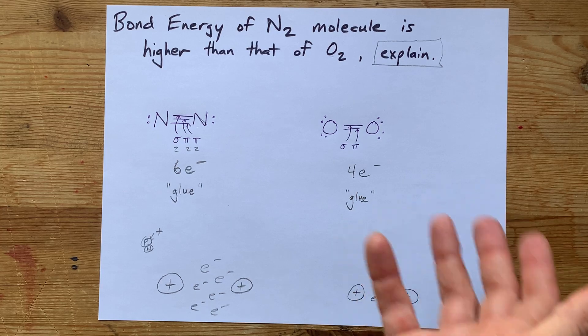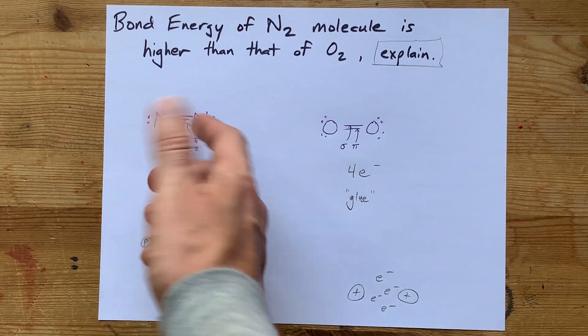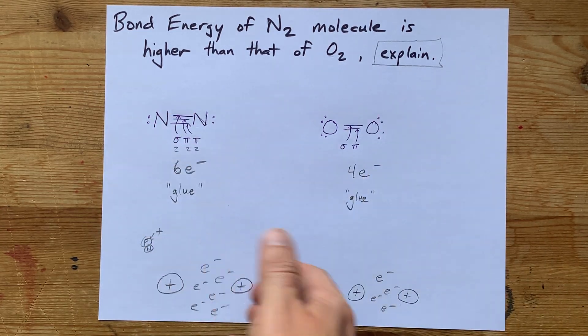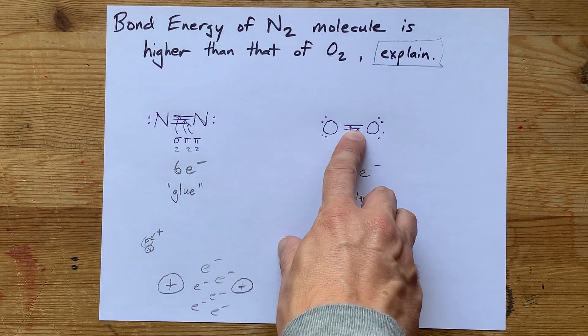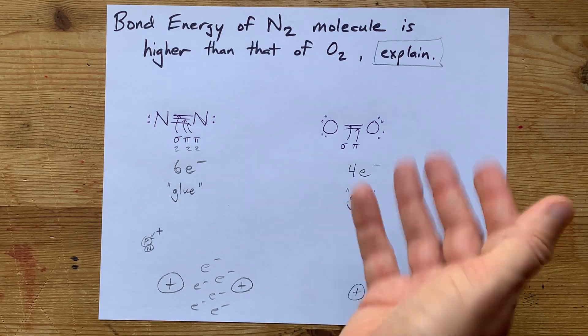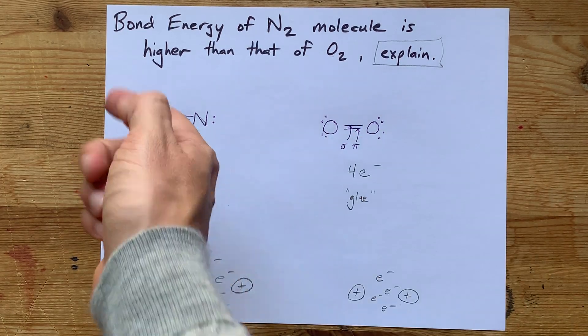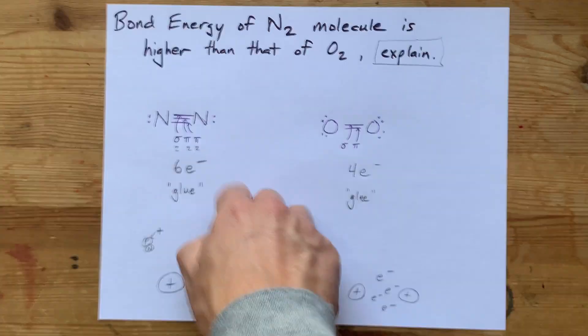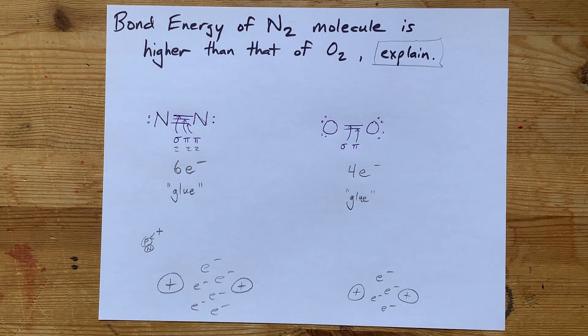The long and short of it is that triple bonds are always more stable and therefore have a higher bond energy than doubles, which have a higher bond energy than singles. But this is a comparison between triple and double, so here you go. Thanks for being with me, and best of luck.